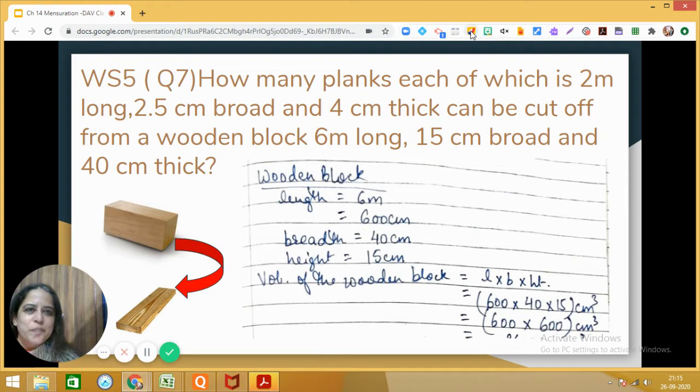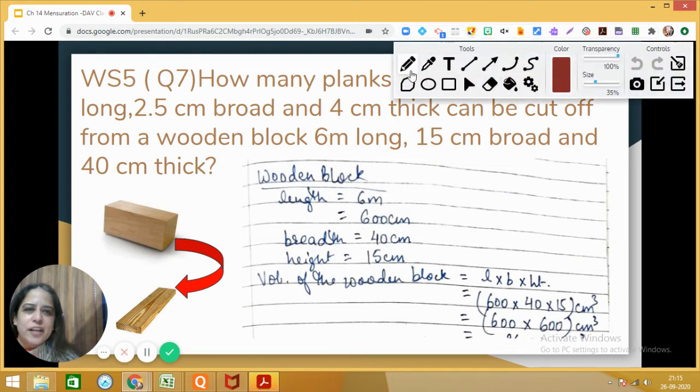So here in this case we are given a wooden block. You can see I have taken a wooden block, and from this wooden block we have to cut different wooden planks. Now we are given the dimension of the wooden block. You see that the shape of this wooden block is a cuboid, and this wooden plank is also in the shape of a cuboid as per the dimensions which are given over here.